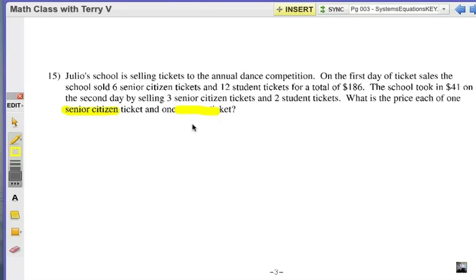Alright, so we've got two variables there. I'm going to go ahead and say that senior citizen we'll call that S and student ticket we'll call it T, T for teenager. So our first task is to write two equations.